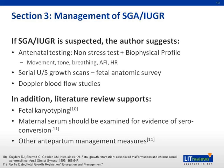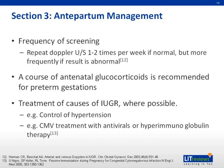These suggestions are in line with current literature. However, when we did a literature search, there are studies that also support fetal karyotyping to screen for karyotypes such as trisomy 21 and 18, which may lead to anatomical defects and SGA/IUGR. Another study suggested performing maternal serum examination for infections such as chorioamnionitis. Other literature suggests repeating ultrasounds one to two times a week if normal, but more frequently if the result is abnormal. Some studies also suggested glucocorticoids for preterm gestation to aid in fetal lung maturity, and if the cause of SGA is found, treatment should be given to the mother immediately — for example, control of hypertension and treatment of CMV with antiviral or hyperimmunoglobulin therapy.